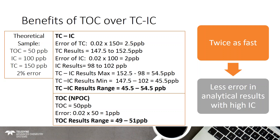Let's talk about the benefits of TOC over TC minus IC. EP 2.244 permits both TOC or TC minus IC. The Fusion is capable of doing either and has methods for both pre-programmed. I chose TOC for this study for two reasons: first, it's twice as fast — you're only taking one measurement instead of two. Second, it has less error in the analytical results, especially for samples that are high in inorganic carbon.